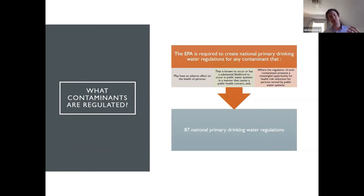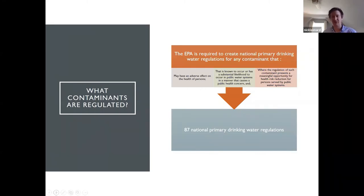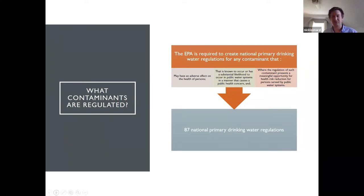Right now we have 87 national primary drinking water regulations. There are more contaminants than that — I've seen lists that go as high as 150, sometimes even more than that — but we currently have 87 national primary drinking water regulations.